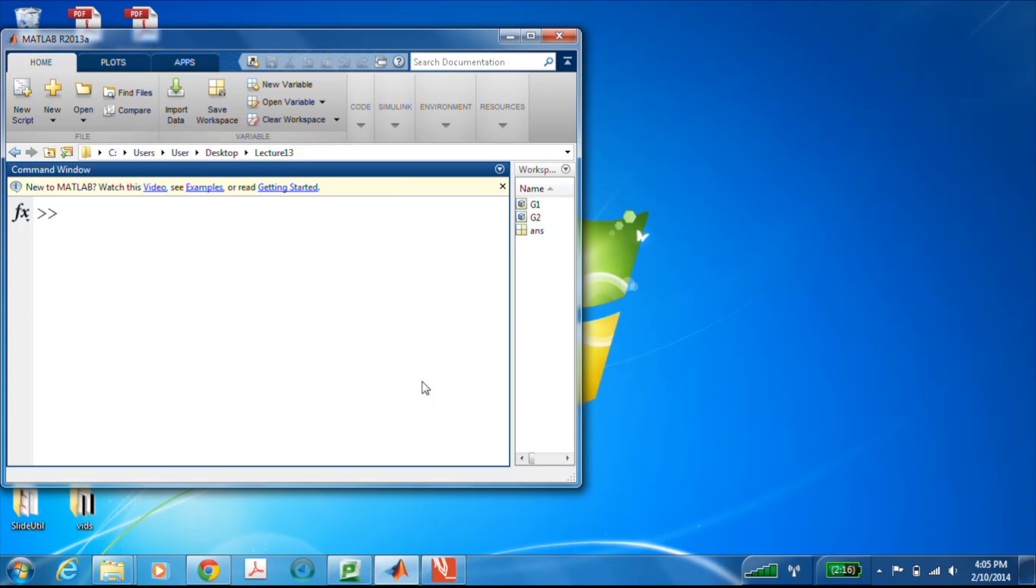Let's code in these two transfer functions. So g1 is equal to the transfer function of 25 over s squared plus 2s plus 25. Actually let's take a look at that. Beautiful. And g2 is transfer function of 2 over s squared plus 2s plus 2. Beautiful.